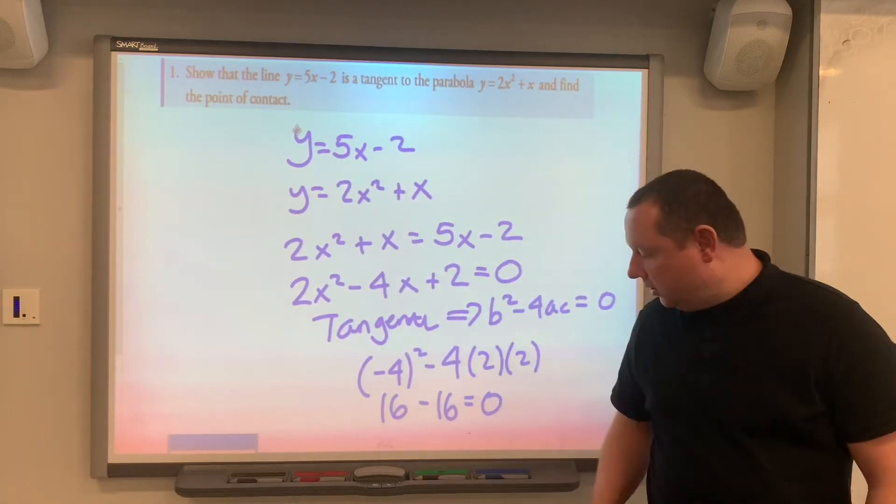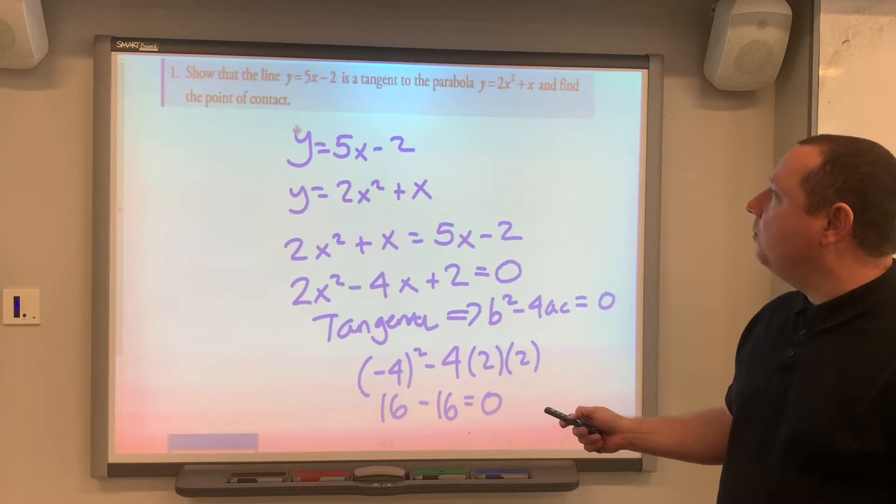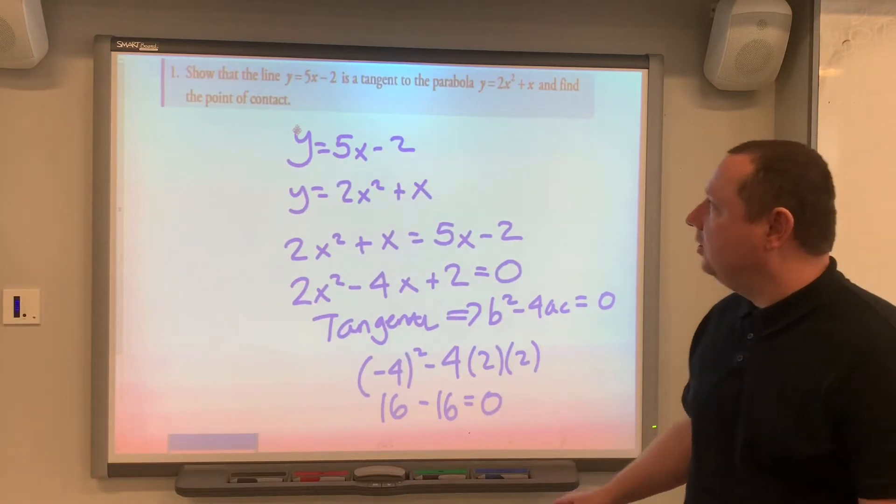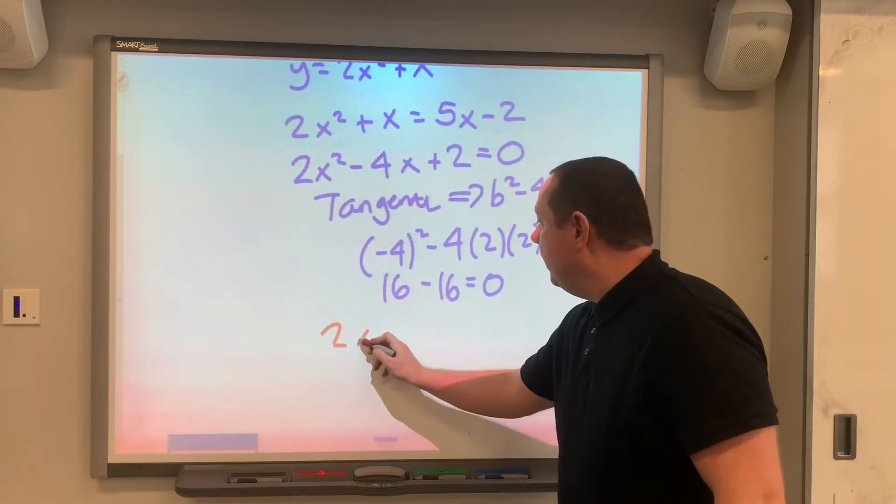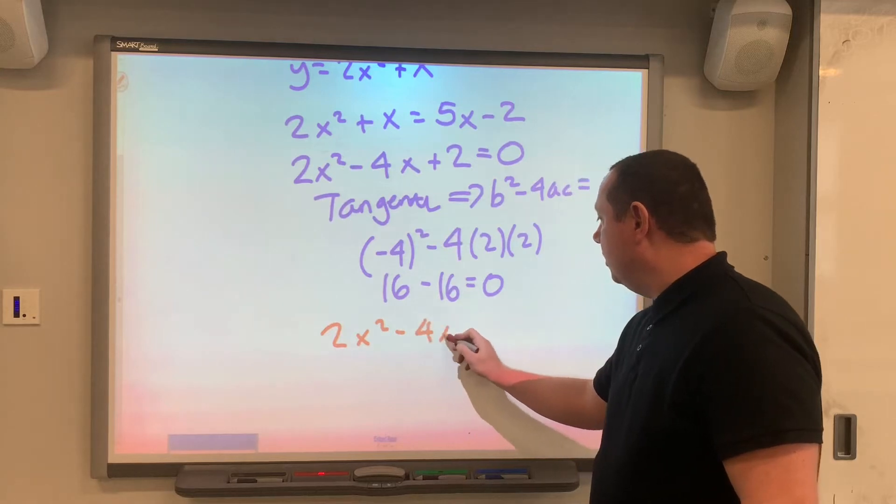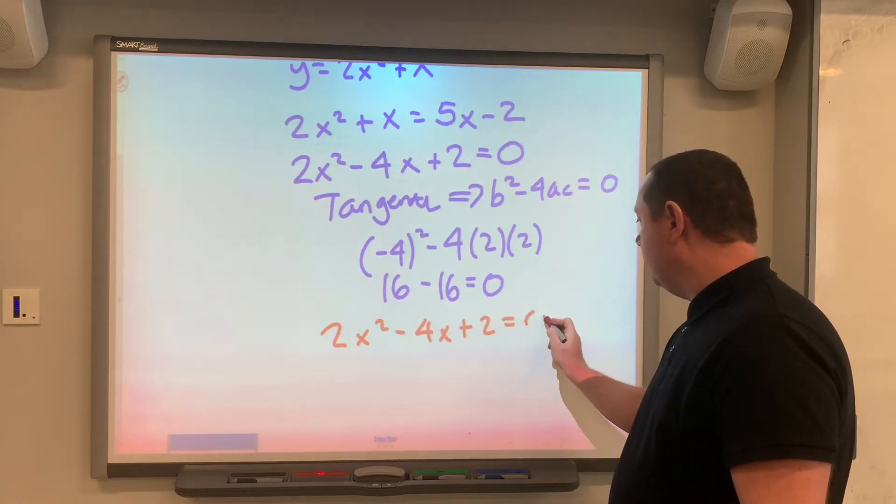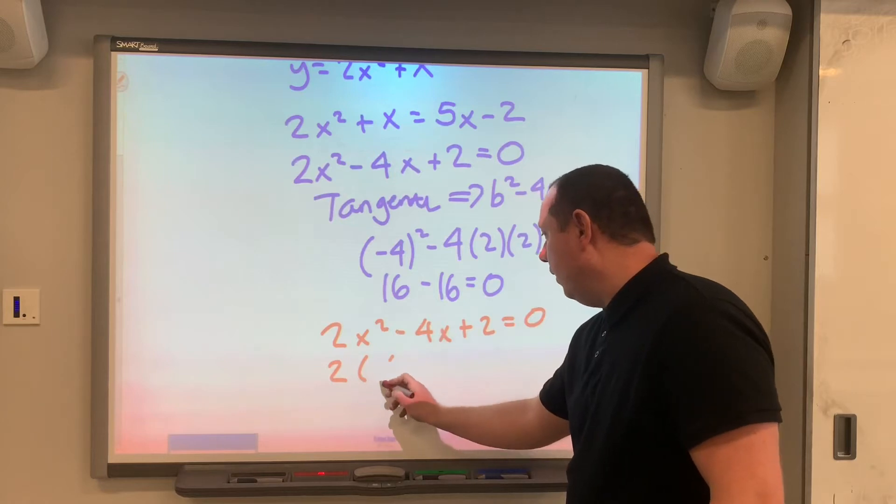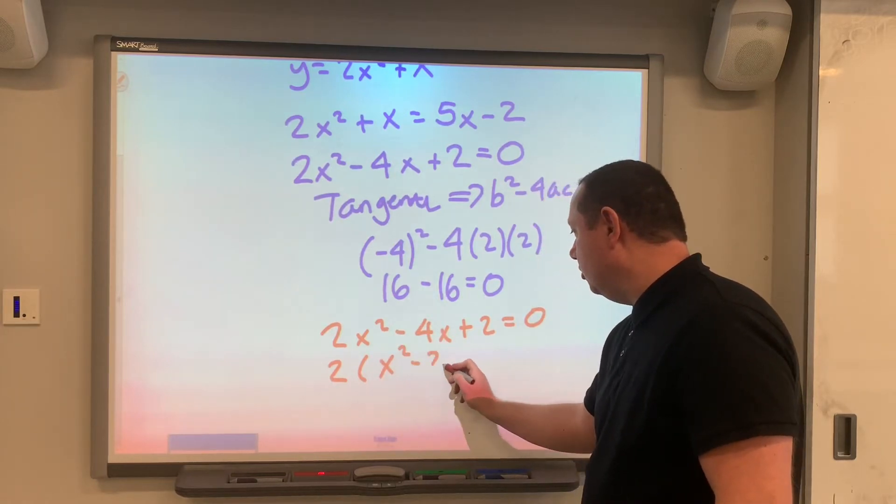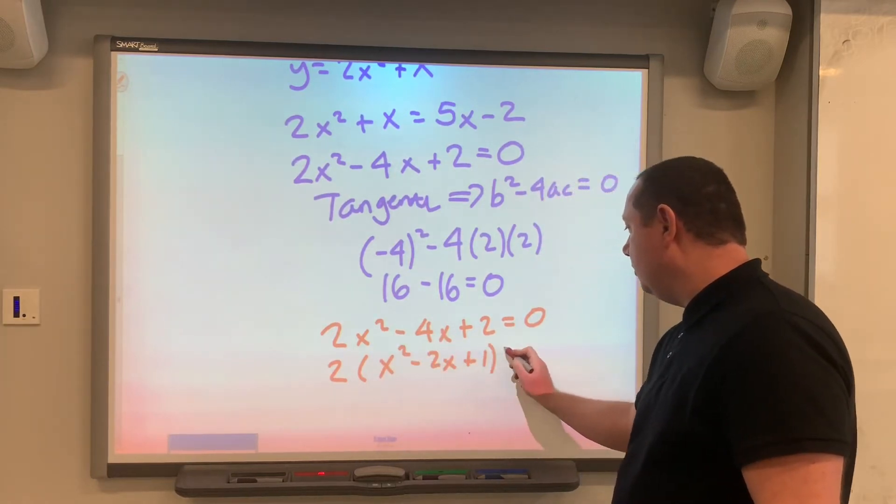Since b squared minus 4ac equals zero, we've proved that it is a tangent. So we've got 2x squared minus 4x plus 2 equals 0. Two is a common factor, so we've got x squared minus 2x plus 1 equals 0.